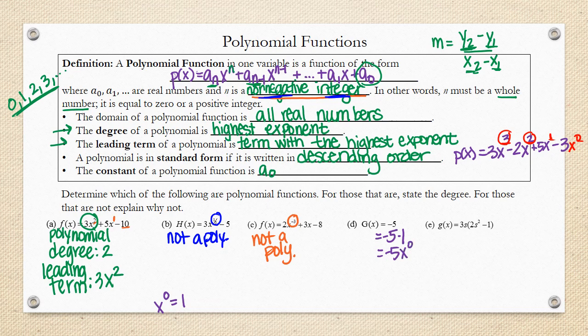These are all equivalent. Negative 5x to the 0 power is the same thing as negative 5. So, this actually works with the definition of a polynomial function. That exponent has to be a non-negative integer. So, it can be 0. So, this would be considered a polynomial. And the degree of it is going to be 0 since that exponent is 0.